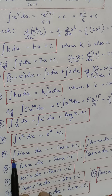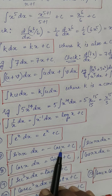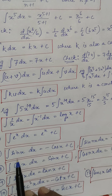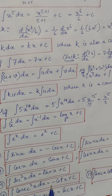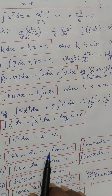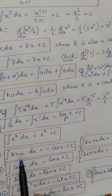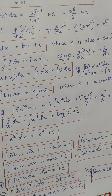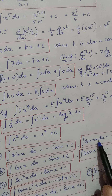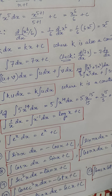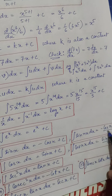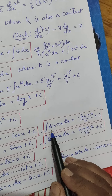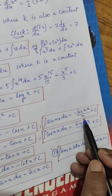Integration of sin x dx is minus cos x, plus c. We know that when we differentiate cos x, we get minus sin x, so the reverse gives integration of sin x as minus cos x. Note that differentiation of sin x is cos x, but integration of sin x is minus cos x. For integration of sin(nx) dx, the result is minus cos(nx) divided by n, plus c, where n comes from the differentiation of nx.